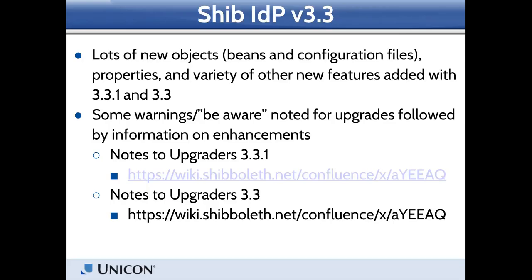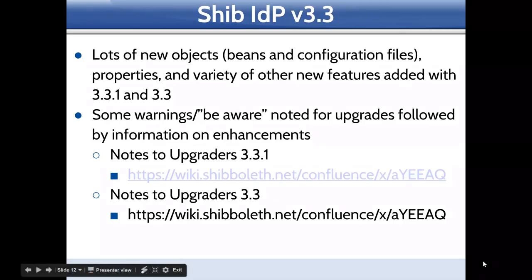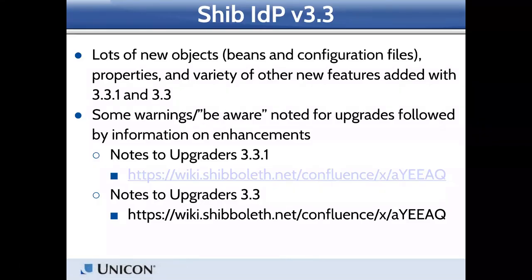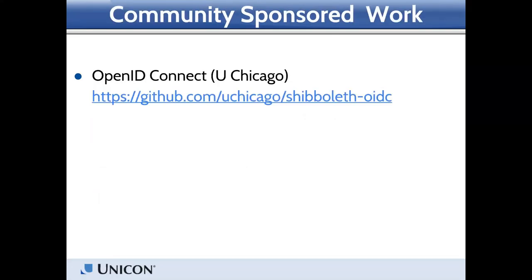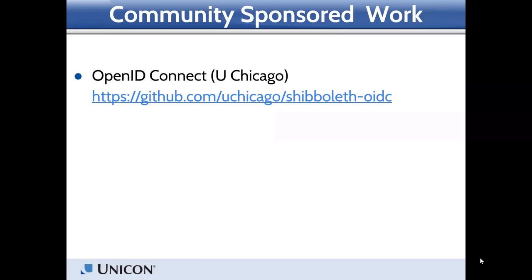There are lots of new beans and configuration files; details are highlighted in the provided links. There are a few warnings about advanced configurations you might need to change when upgrading from 3.2 to 3.3. If you're jumping from 3.2, you'll want to look at the upgrade notes for both 3.3 and 3.3.1 since they aren't duplicative — you need to account for both.